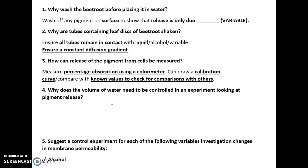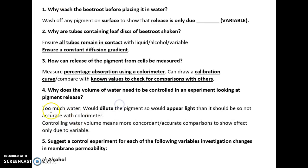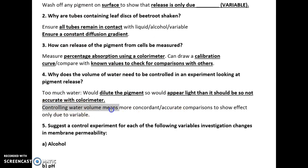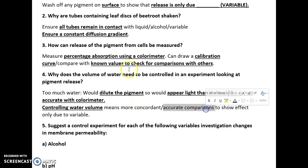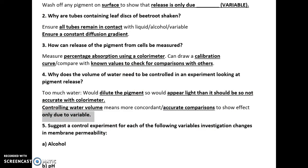Why does the volume of water need to be controlled in an experiment looking at pigment release? If there's too much water, that would dilute the pigment, so the test tube would appear lighter than it should and will not produce an accurate reading for the percentage absorbance. Therefore the water volume must be controlled as a control variable to ensure you can make accurate comparisons, showing that the effect is only due to the variable you are changing.